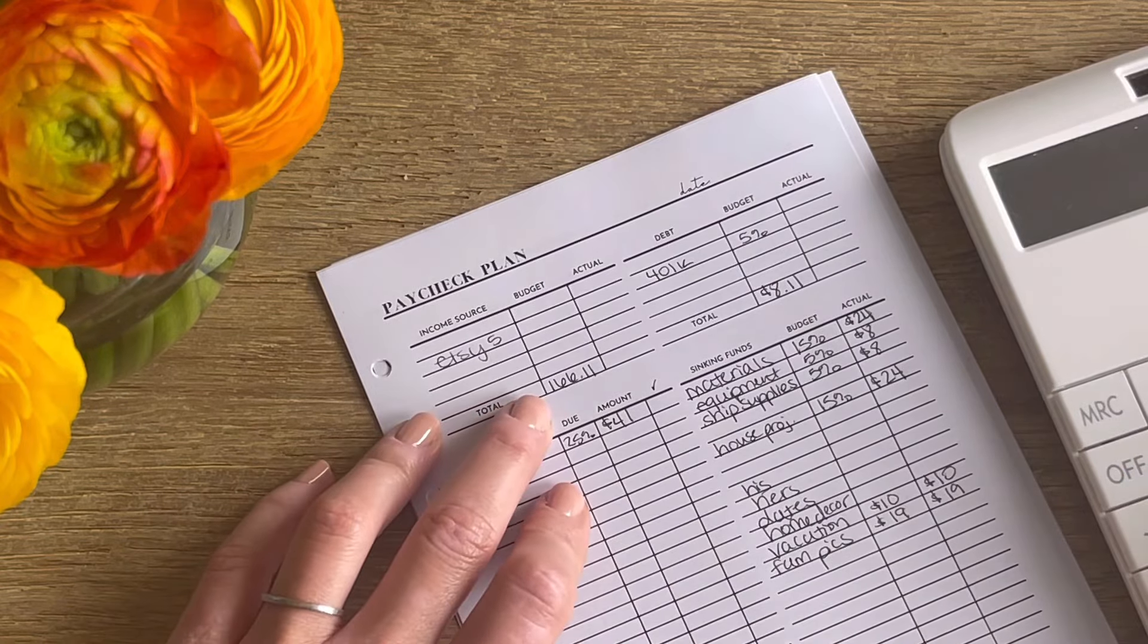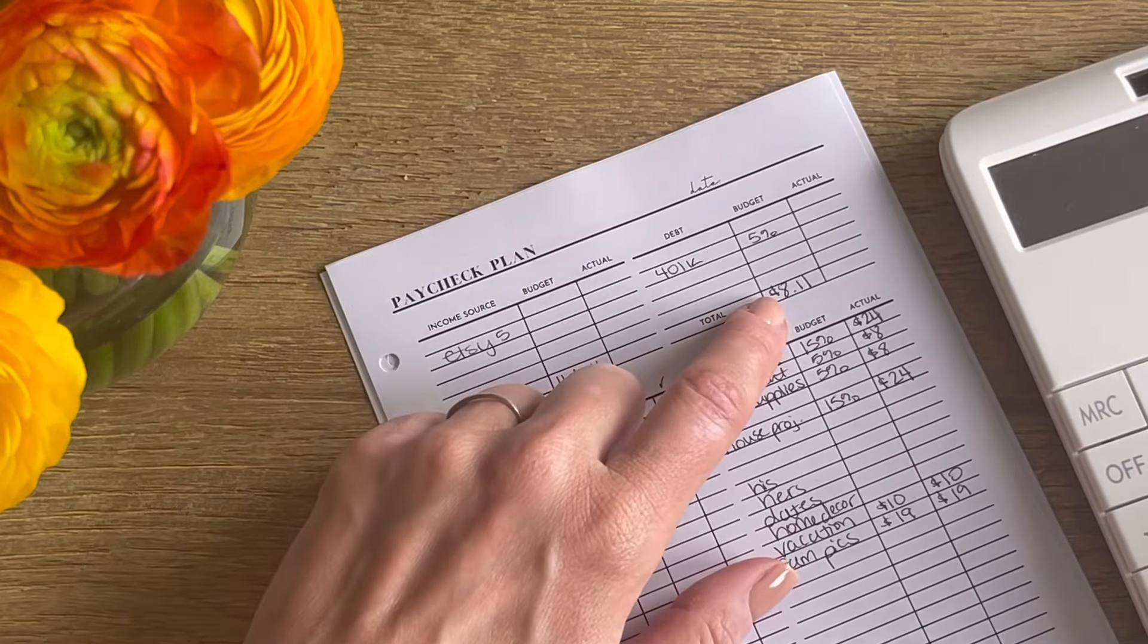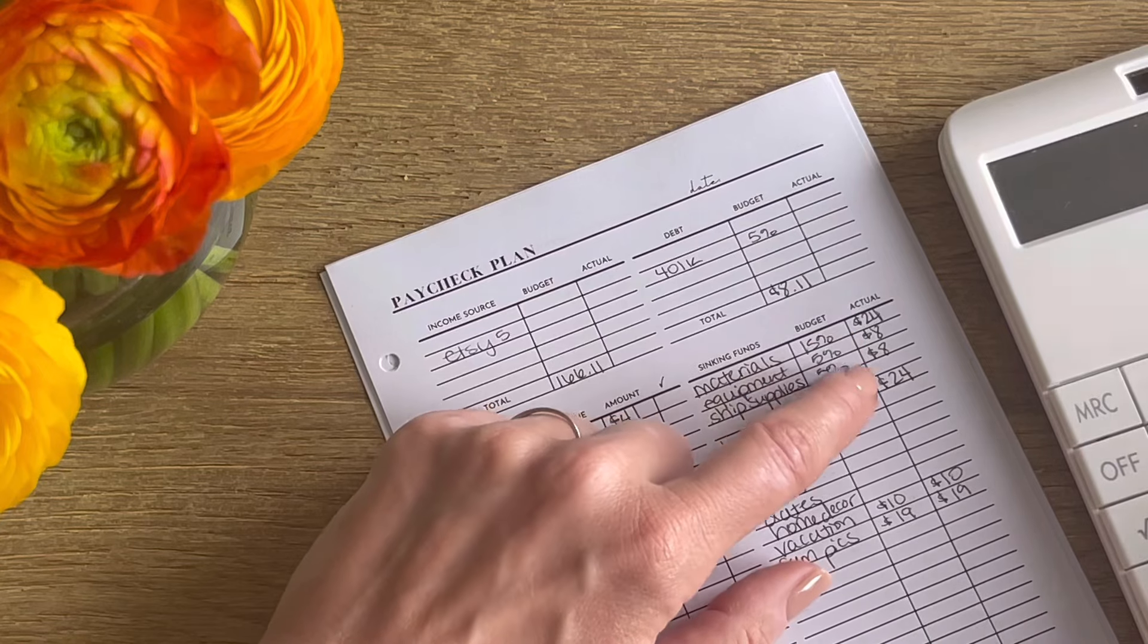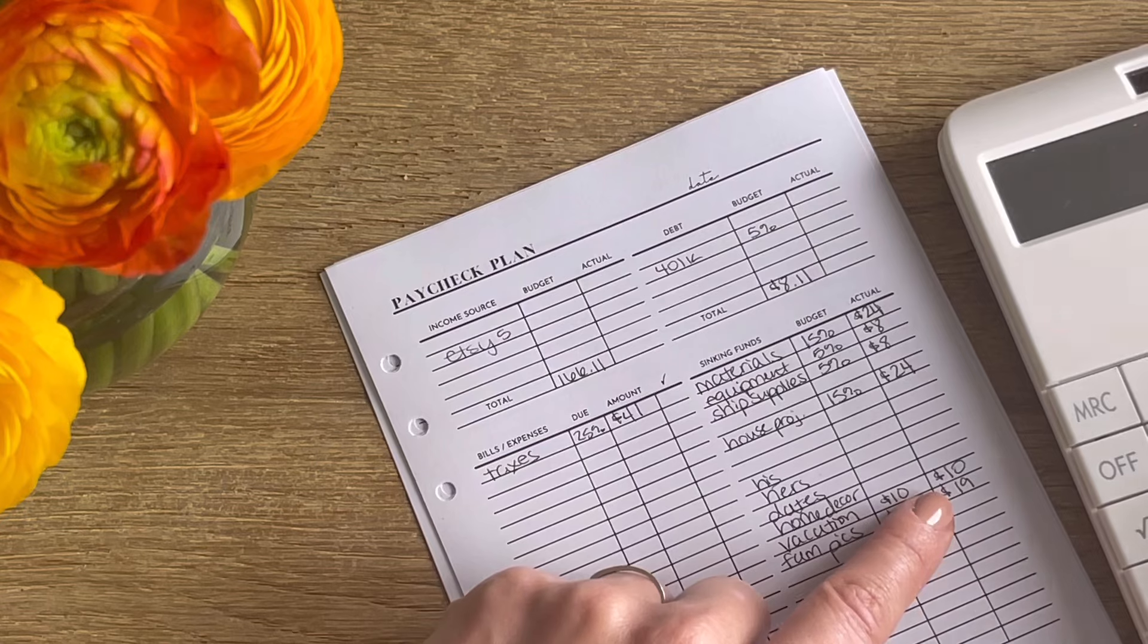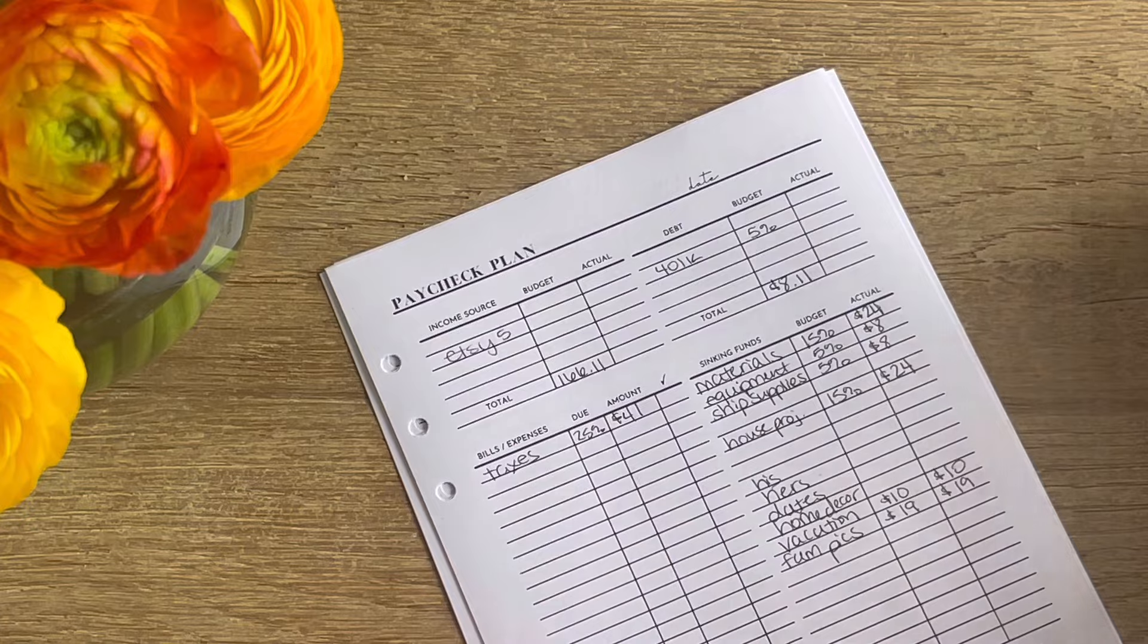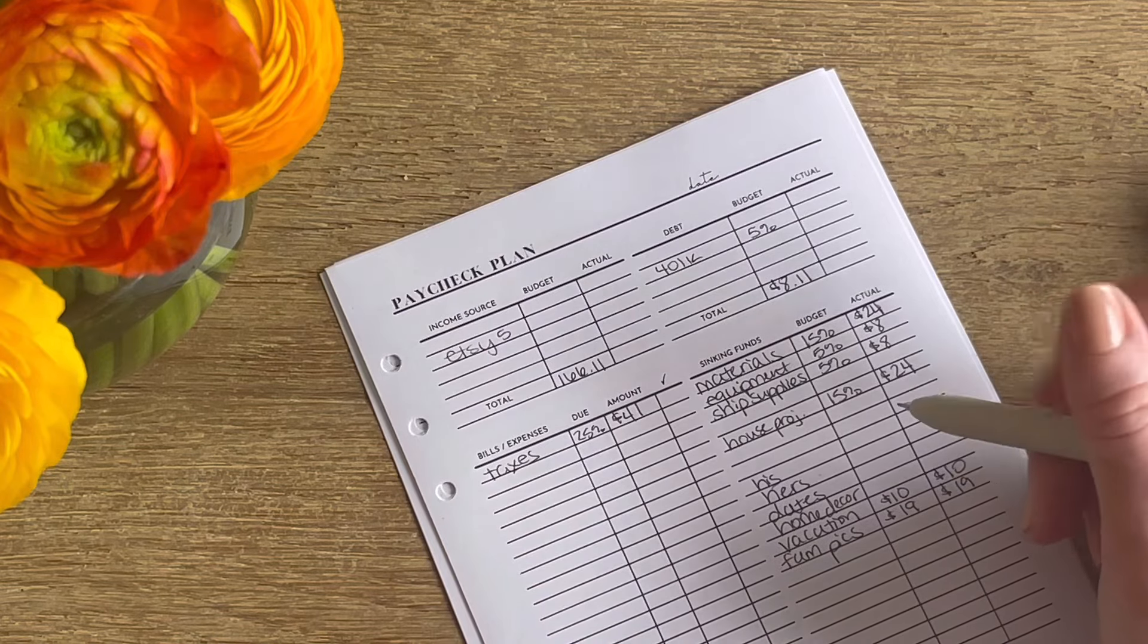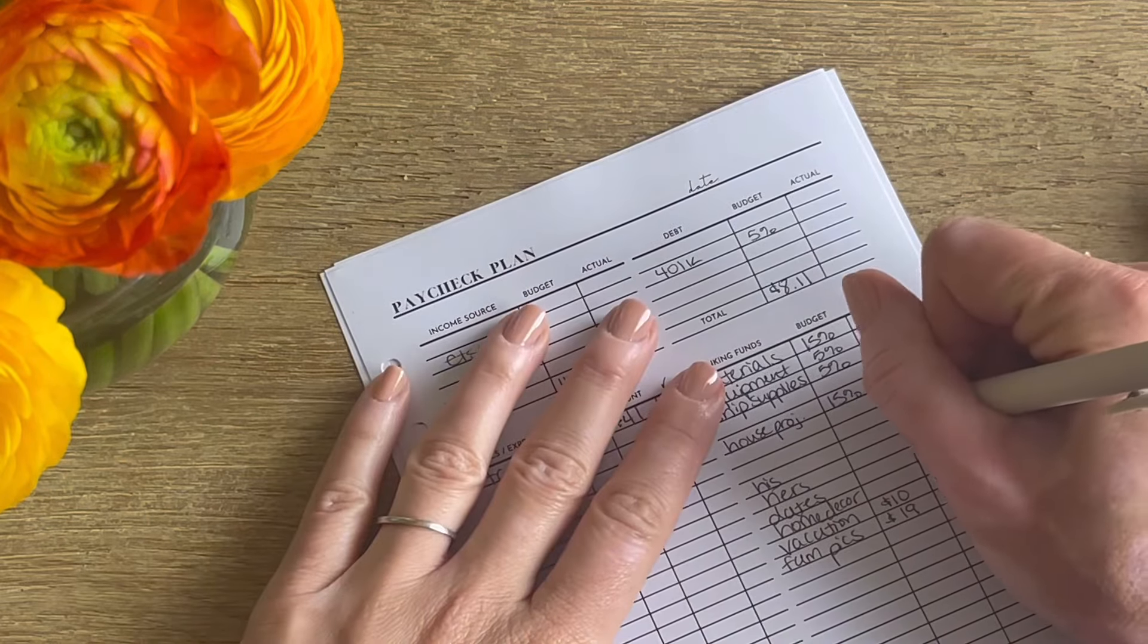Okay. So what I'm going to do now actually is figure out how much we have remaining then to fund these last four categories. So we started with $166.11. We did $41 for taxes, $8.11 for debt, and then $24 for materials, $8 for equipment, $8 for shipping supplies, $24 for house project, $10 for vacation, and $19 for family pics. So that leaves us $24.